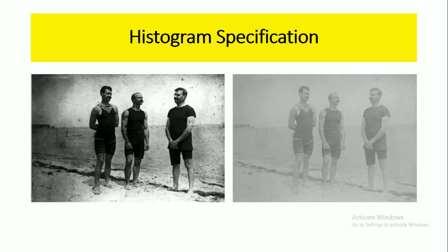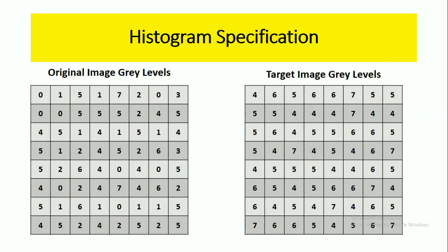For these two images, we are representing them in the form of a matrix. Here it is the original image gray levels represented by an 8x8 matrix, and here it is the target image gray levels represented by an 8x8 matrix size.